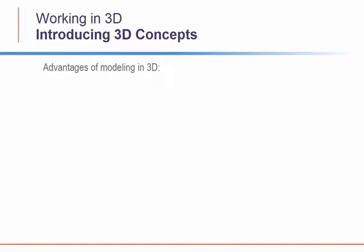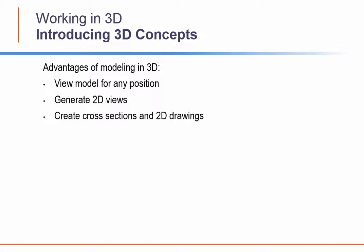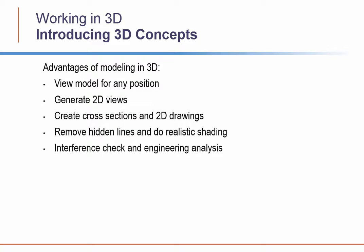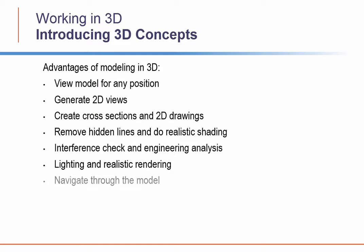Modeling in 3D has several advantages. You can view the model from any vantage point. You can generate reliable standard and auxiliary 2D views automatically, create sections and 2D drawings, and remove hidden lines and apply realistic shading. You can check for interferences and perform engineering analysis, add lighting and create realistic rendering, navigate your way through the model, create an animation, and extract manufacturing data.